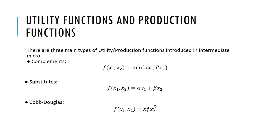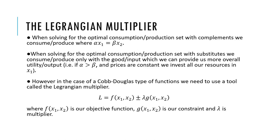The three main utility and production functions are complements, substitutes, and Cobb-Douglas, as listed on this slide. When solving for the optimal consumption or production set with complements, we consume or produce where α·X1 is equal to β·X2.